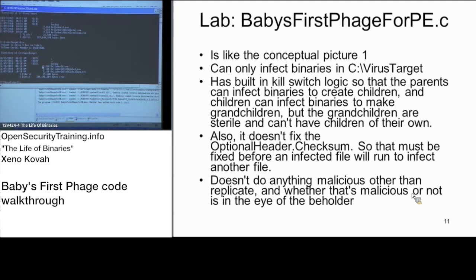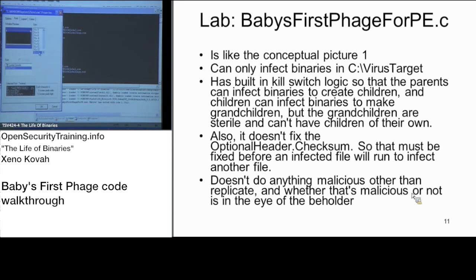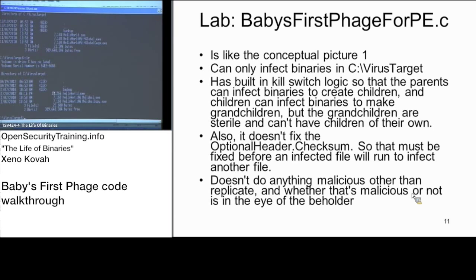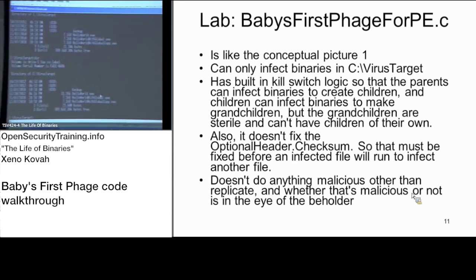It finds itself as the first executable, then uses a self-avoidance technique — I think Veronica's class called it that. You set a magic value within the file so you don't double-infect it; you don't want to keep tacking virus code onto the same file. Up in the DOS header there's an unused value; the virus checks if that magic value is set — if so, skip it and move on. That's what stops it from reinfecting itself over and over.